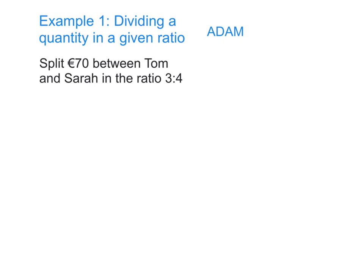So the question that we have today is to split 70 euro between two people, Tom and Sarah, in the ratio 3 is to 4. So basically they don't deserve 35 euro each—they have maybe paid different amounts towards this lotto ticket or one has done more work than the other for this particular amount of money. So we're going to use Adam to help us.